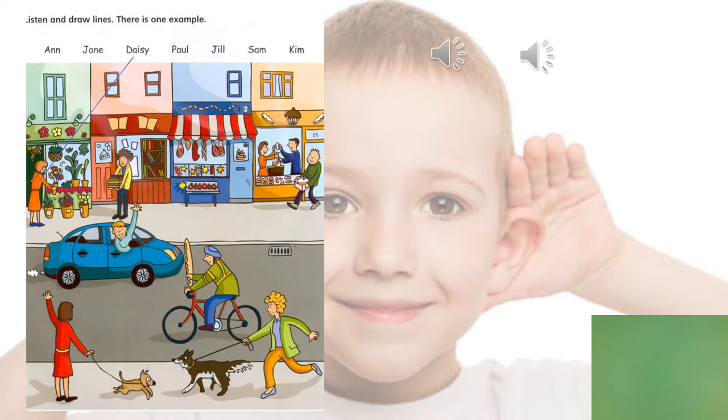Guys, here's the first exercise. You have to listen and draw the lines. The first one is an example. We're going to listen to an example first, that it's already done for us, and then we'll listen to the rest of the question. This is the Movers Listening Test, Test 1. Look at part 1, look at the picture. Listen and look. There is one example.